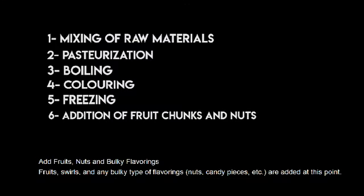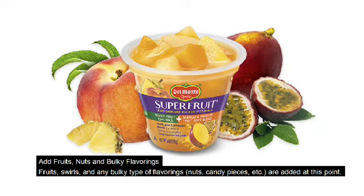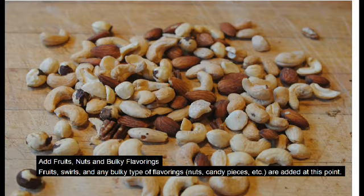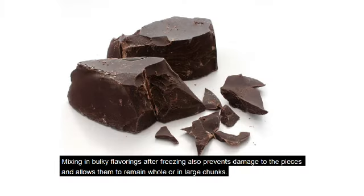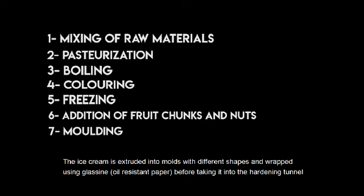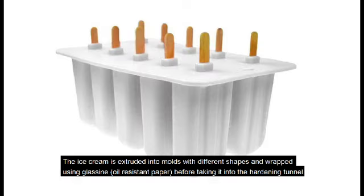Adding fruits, nuts, and bulky flavorings: fruits, swirls, and any bulky type of flavorings like nuts and candy pieces are added at this point. Mixing in bulky flavorings after freezing also prevents damage to the pieces and allows them to remain whole or in large chunks.